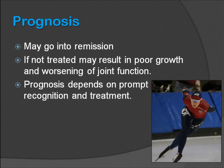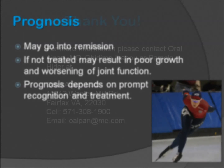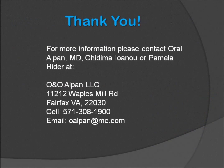The prognosis of JIA can be very variable. This is a disease that may go into remission, but if not treated, may result in poor growth and worsening of joint function. Therefore, the prognosis depends on prompt recognition and treatment. The immune system can be modified with a variety of treatment regimens described in this presentation, which will not impact the progression of the underlying immunological dysfunction, but will prevent the destruction secondary to the underlying immune activation. Thank you for listening to this brief presentation of juvenile idiopathic arthritis. I hope this overview helps with the presentation, diagnostic approaches, and treatment decision making. For more information, please contact Oral Alpan at ONO Alpan in Fairfax, Virginia.